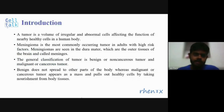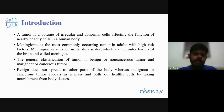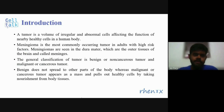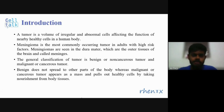I'll start with the introduction of tumor. A tumor is an excessive body cell affecting healthy cells. Formally, a tumor is a volume of irregular and abnormal cells affecting the function of nearby healthy cells in the human body. Out of all tumors, meningioma is the most common type occurring in adults with a high risk factor. Meningiomas are seen in the dura mater, which are the outer tissues of the brain.